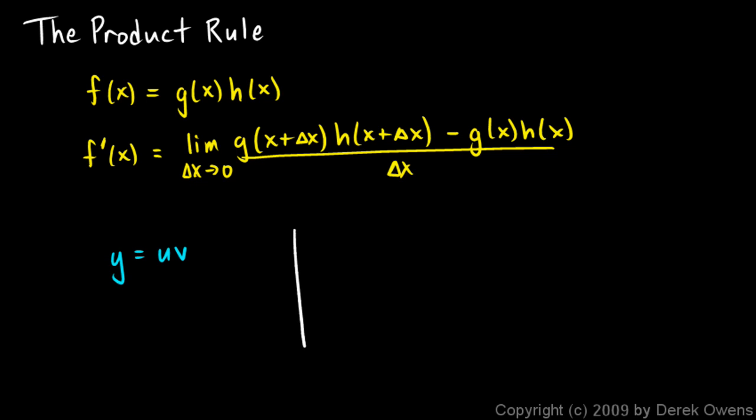And if you think about these on the graphs, u and v are both functions of x. So we'll say this is u and this is v, and x is the independent variable in both cases. And these are two functions. It doesn't really matter what they look like, because we're going to be working out the general case.